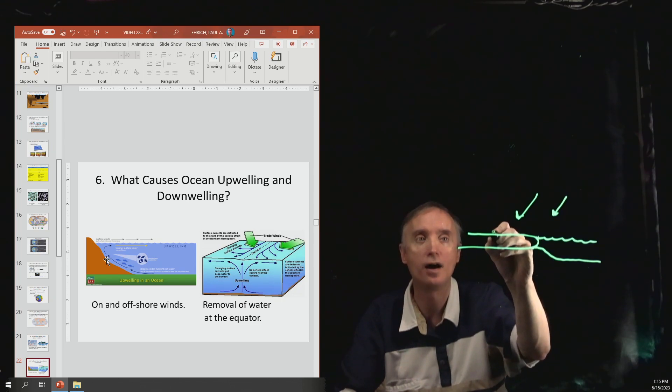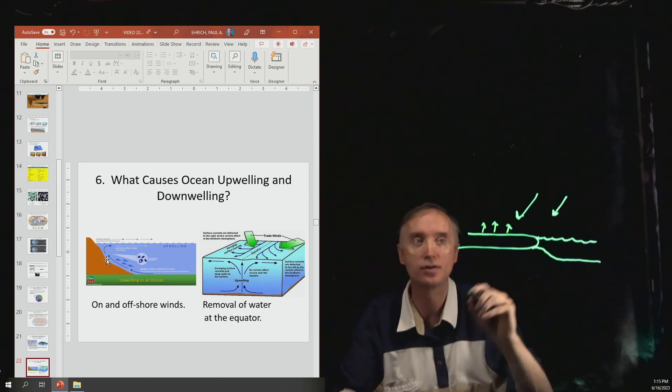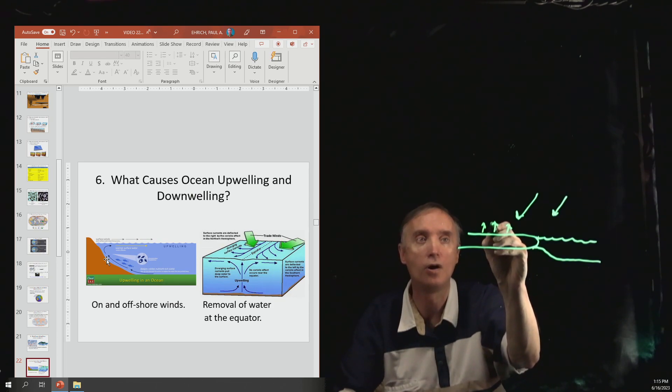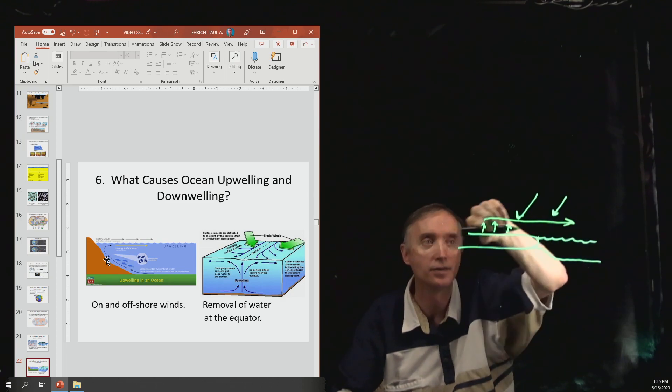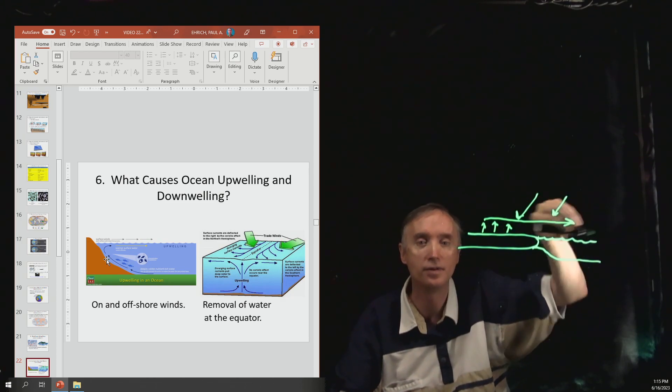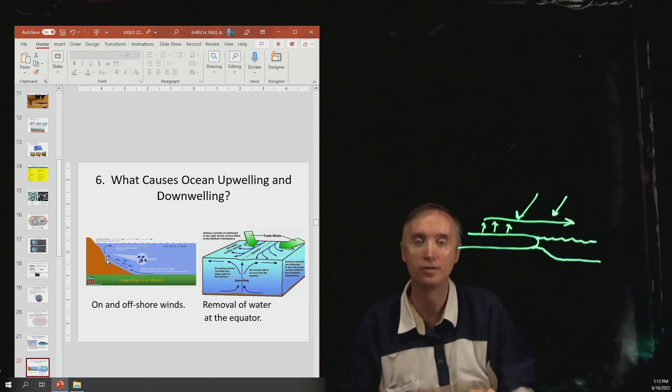So that hot air which is rising has to go somewhere and so it's going to go offshore like this. So it's going to make a wind system that is going to be blowing in this direction. So we're going to call that an offshore wind system.